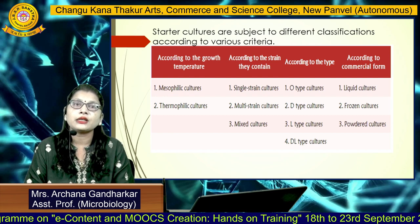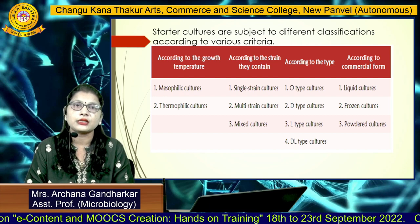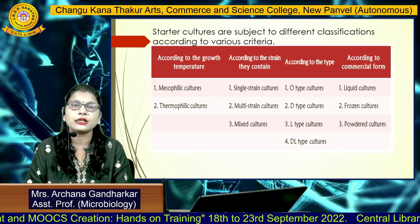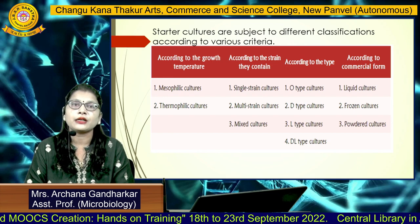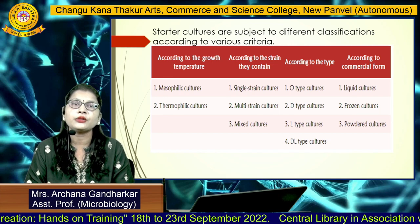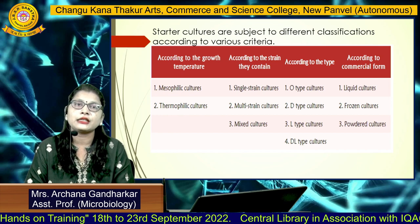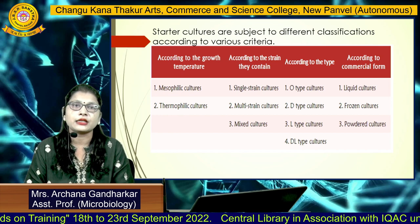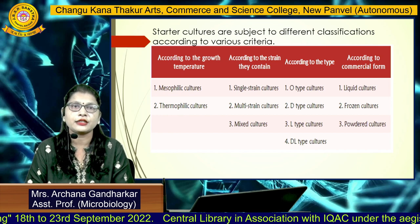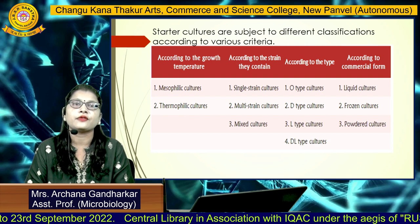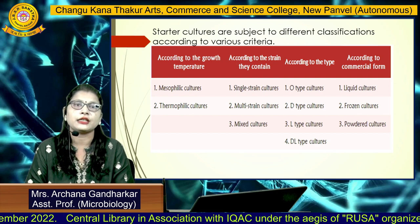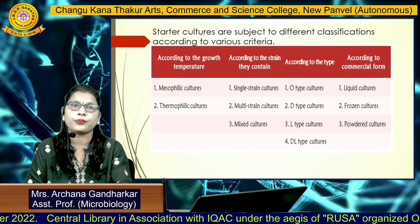Classification can also be based on growth temperatures — organisms are either mesophilic or thermophilic in nature. According to type, there are four varieties of starter culture: O type, D type, L type, and DL type culture. According to commercial use, cultures are available as liquid culture, frozen culture, or powder culture.